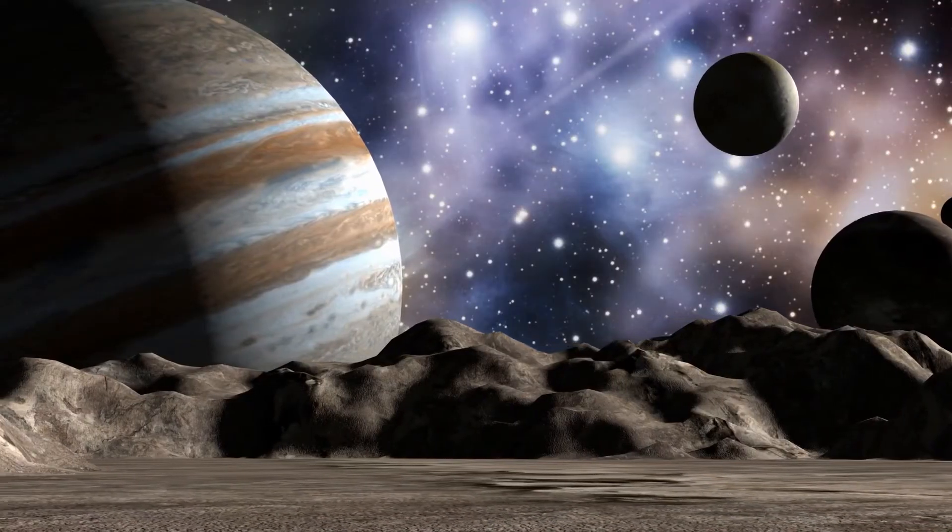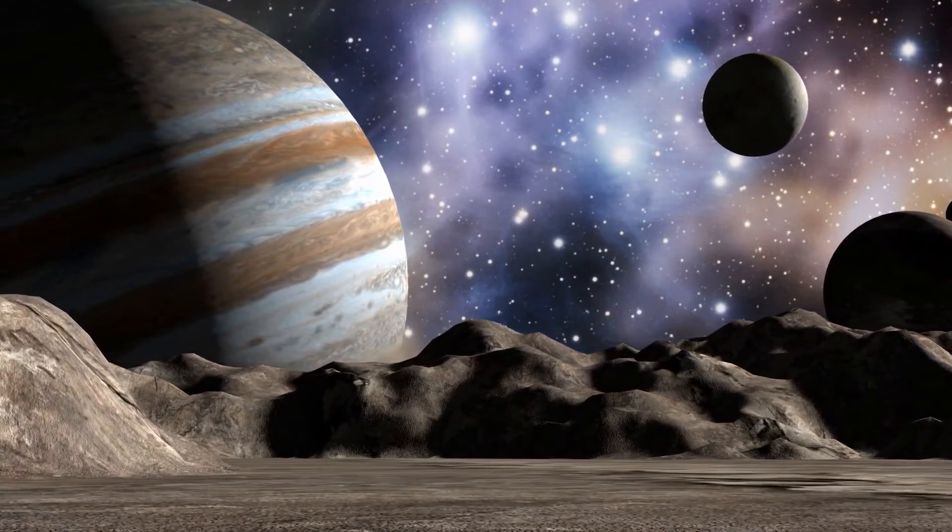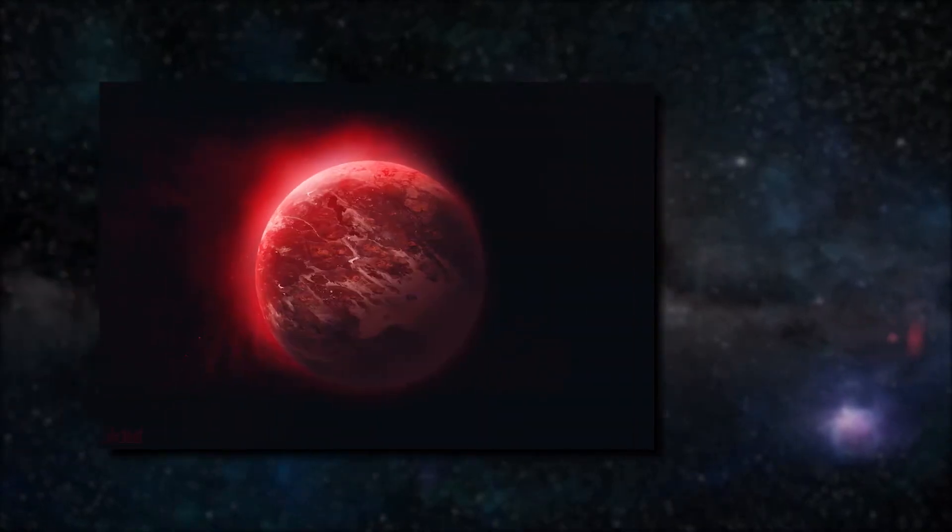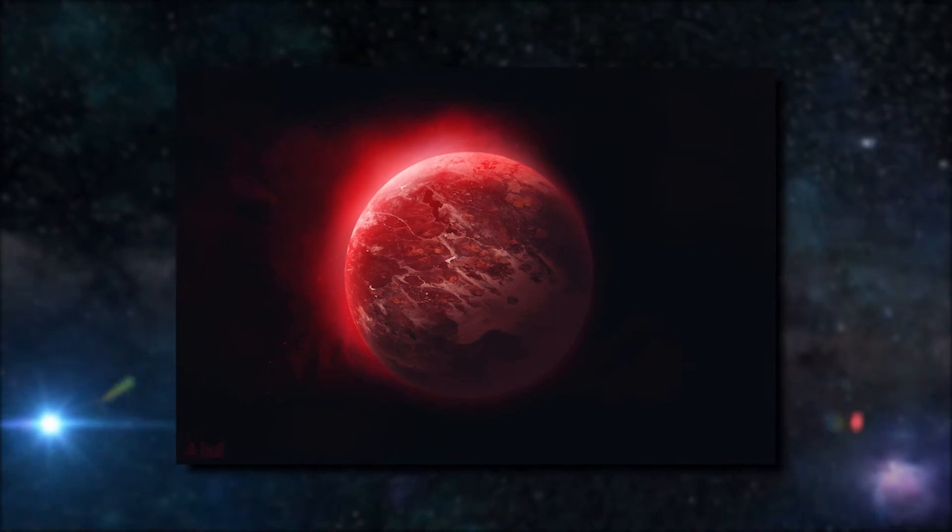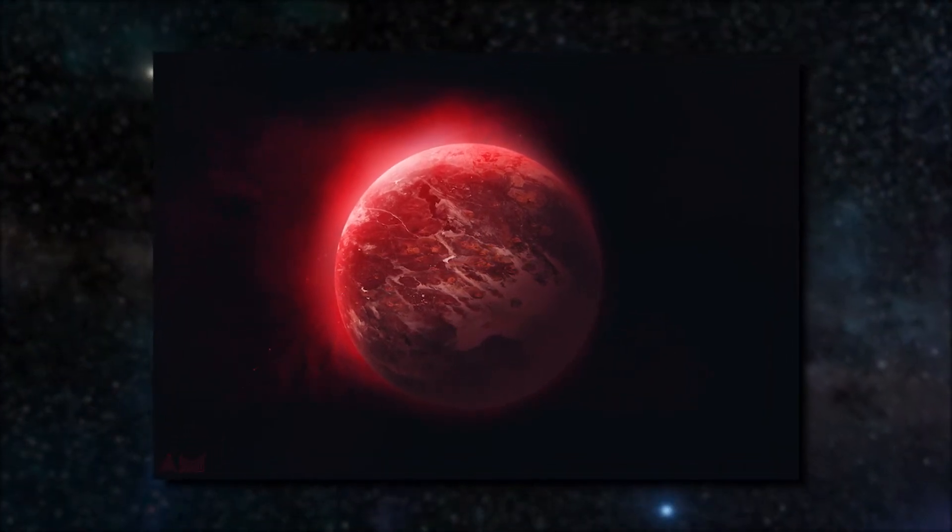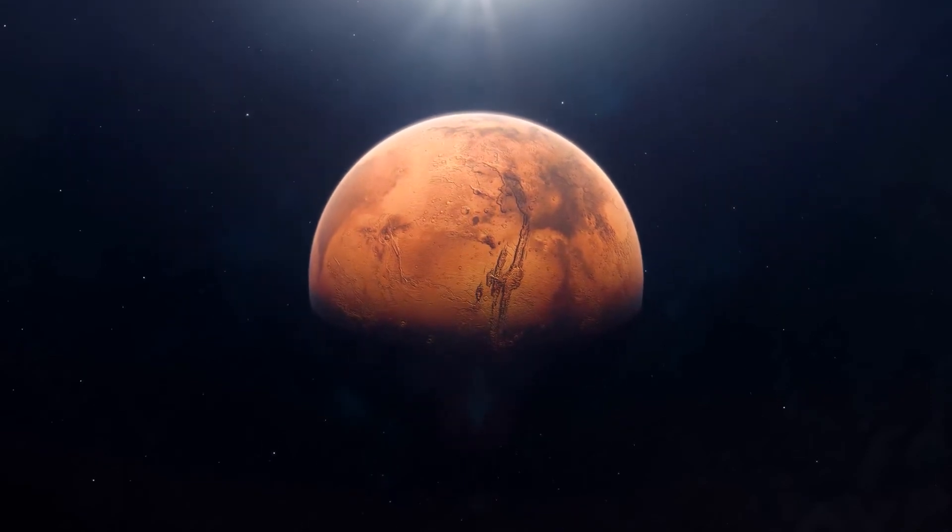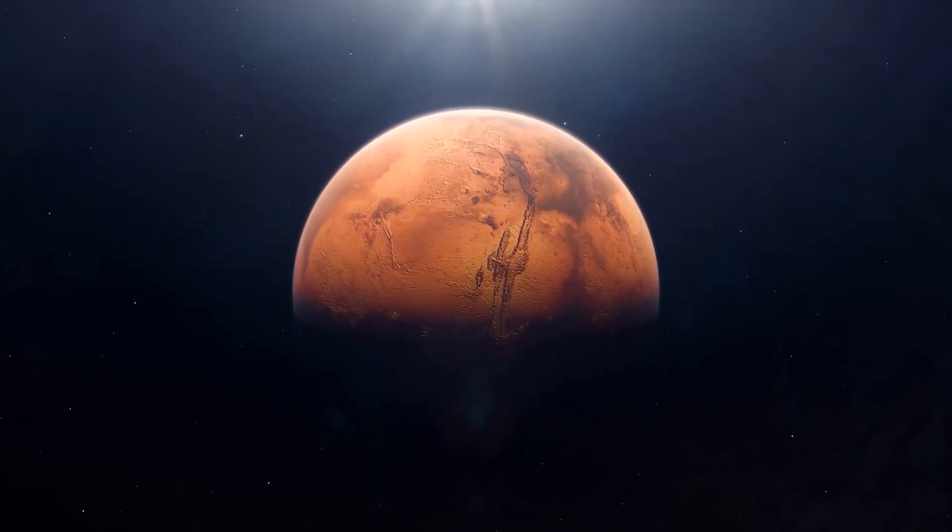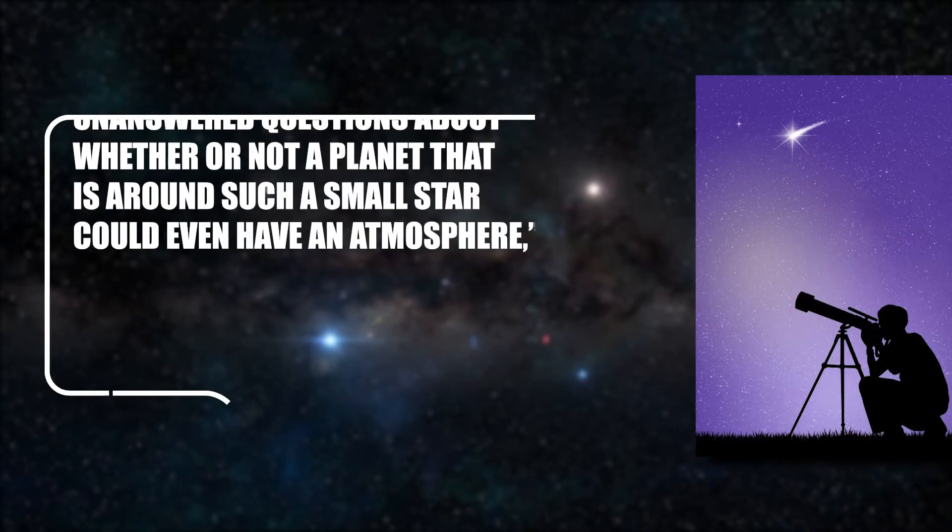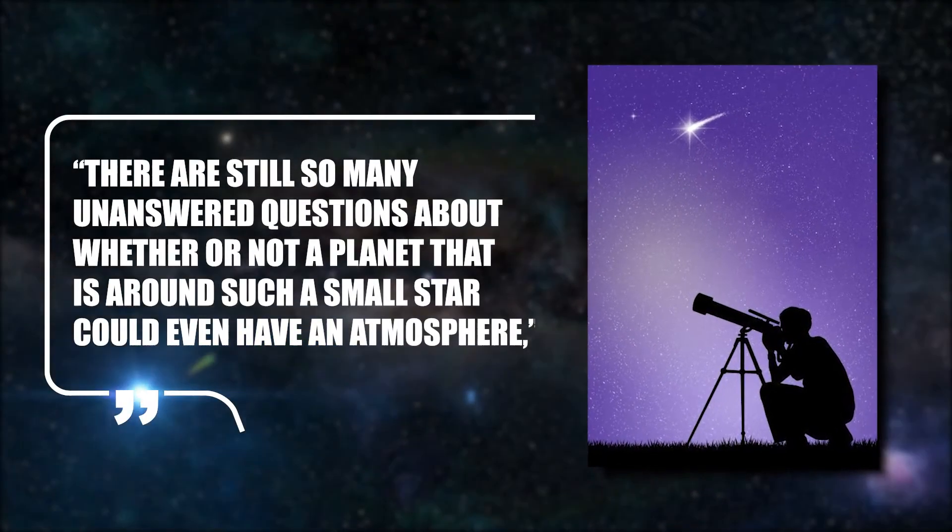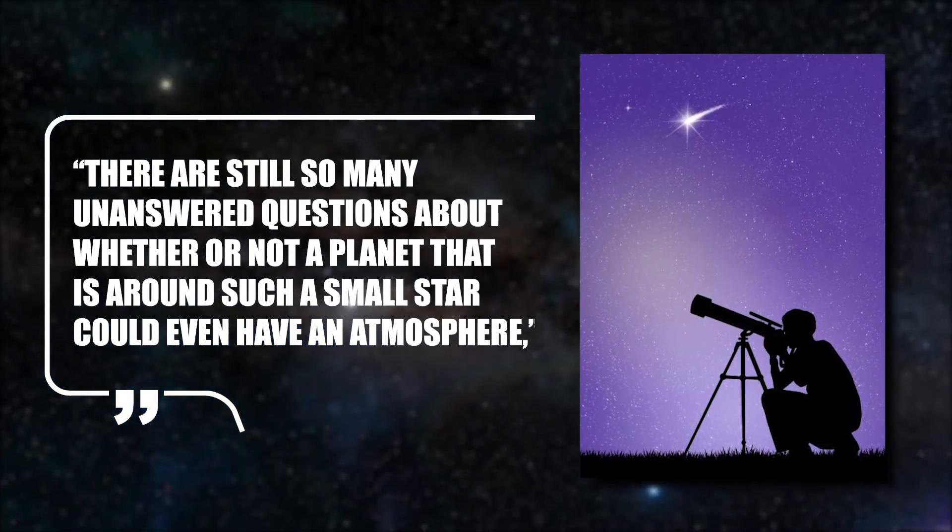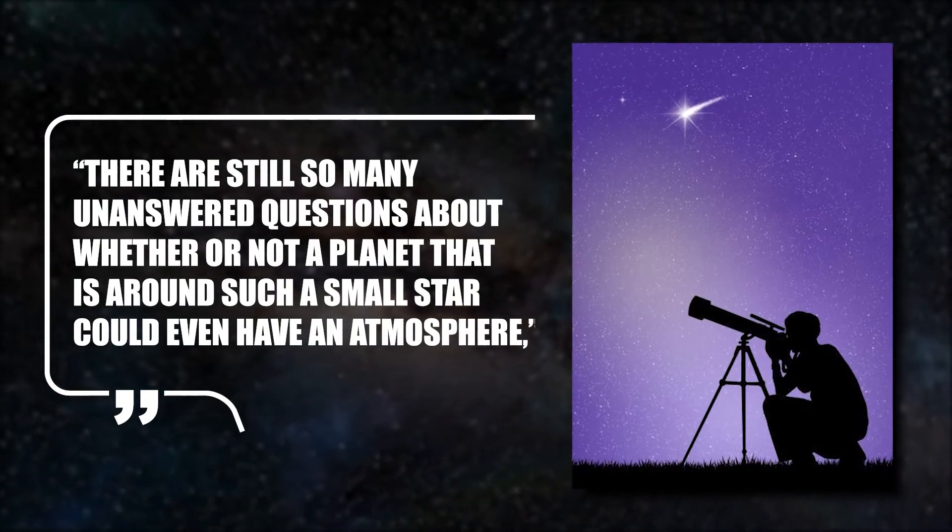Among the early planetary targets are a handful of rocky, Earth-sized worlds, but they orbit small, reddish stars that are prone to tempestuous outbursts of radiation that might sterilize their surfaces. Whether those worlds have atmospheres at all is the first thing the James Webb Telescope will attempt to determine. There are still so many unanswered questions about whether or not a planet that is around such a small star could even have an atmosphere.